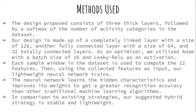The neural network is trained and learns hidden characteristics, improving its ability to achieve greater representational accuracy than traditional machine learning algorithms. Compared to existing strategies, the proposed hybrid strategy is remarkable and lightweight, challenging the state of the art and showing results even better than current state-of-the-art methodologies.